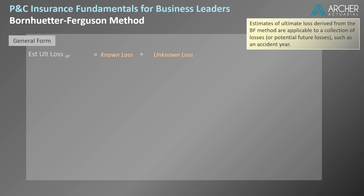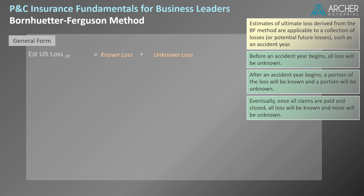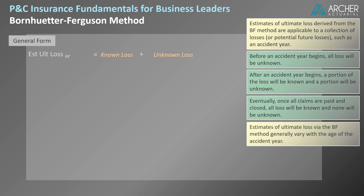Let's talk about the two components of ultimate loss in our formula: known loss and unknown loss. Recognize that what is known or unknown changes over time. Before an accident year begins, all loss associated with that accident year will be unknown. After it begins, a portion of the loss will be known and a portion will be unknown. Eventually, once all claims are paid and closed, all loss will be known and none will be unknown. So the takeaway is that estimates of ultimate loss via the BF method generally vary with the age of the accident year.